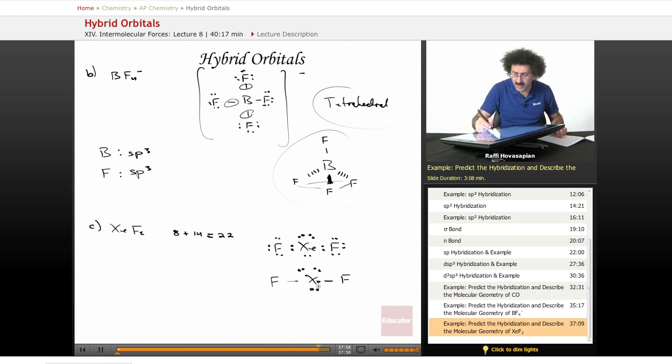5 objects around xenon. 5 objects is DSP3. 3, 4, 5. 3Ps, 1s, 1d gives me that kind of hybridization.